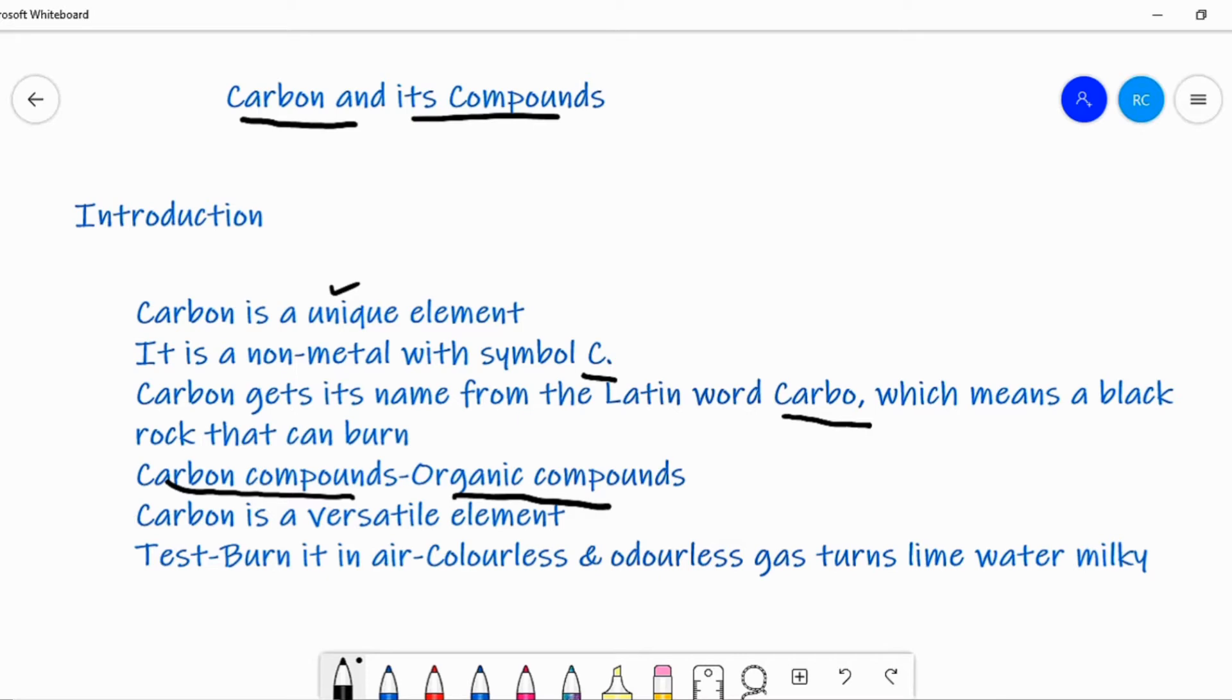Similarly, materials like cotton, wool, silk, nylon, and terylene which are used for making clothes are carbon compounds.